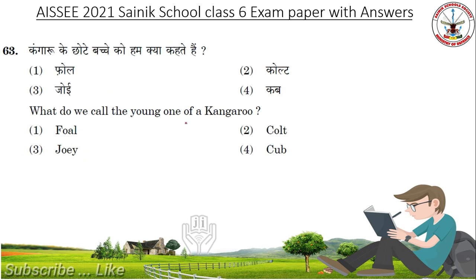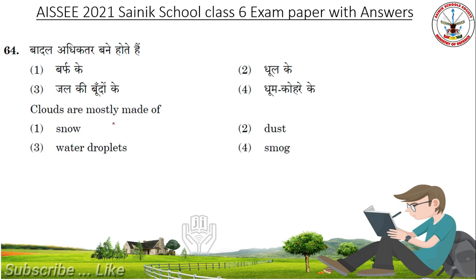What do we call the ankle bone of a Kangaroo? Answer: Joy. Clouds are mostly made of — snow, dust, water droplets, or smoke. Answer: Water droplets.